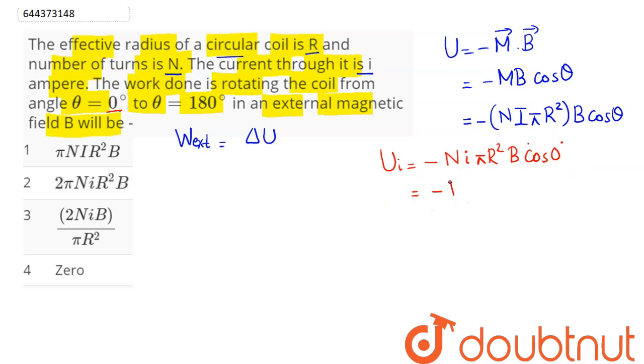So initial potential energy is equal to minus N I pi R square into B. And we can say here the final potential energy comes out to be for angle 180 degree. This is equal to N into I into pi into R square into B into cos of 180 degree which is minus 1.